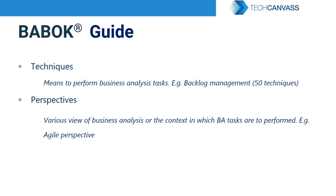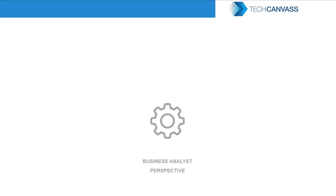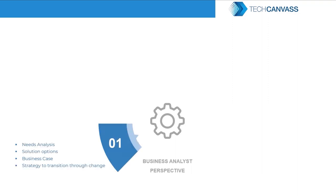Now let's look at the knowledge areas as presented in the guide. Each knowledge area represents one activity set for a business analyst. Consider an organization facing a particular problem — for example, customers complaining about a product or service — or an opportunity where they are looking to grow faster or grow more.